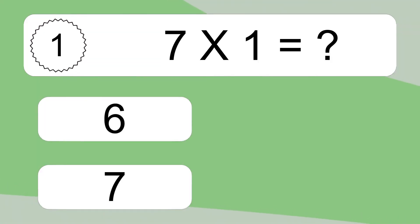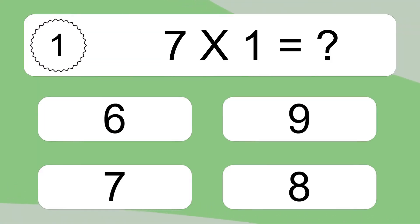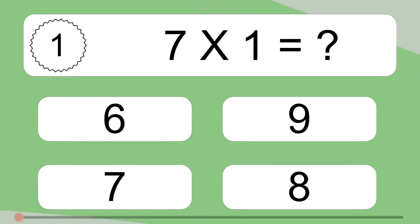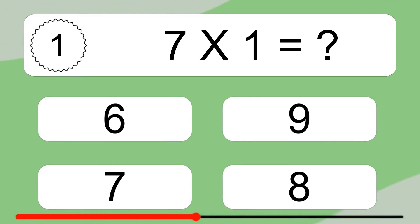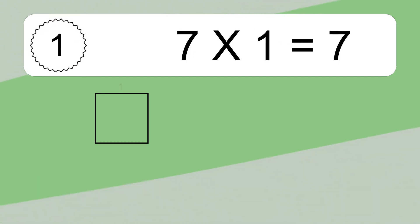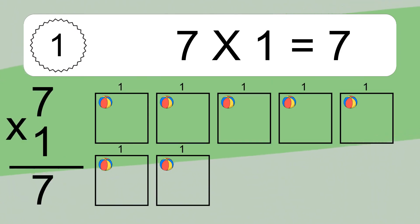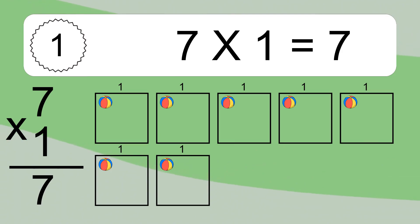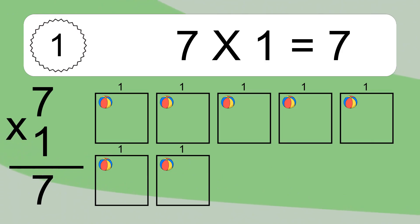7 times 1 equals what? 7 times 1 equals 7. We have 7 boxes, and each box has 1 colorful ball inside. If you count all the balls in all the boxes together, you will have 7 times 1 balls. This equals 7 balls.